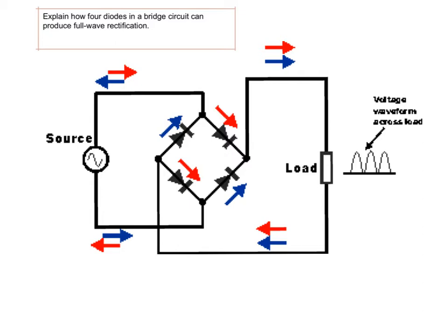Let's look at the red and blue arrows. We can see the red arrows are flowing clockwise, while the blue arrows are flowing anticlockwise. This is important because it's showing the AC electricity — sometimes the electricity flows anticlockwise, and sometimes it flows clockwise.